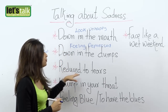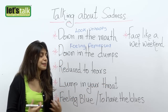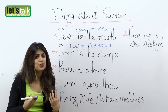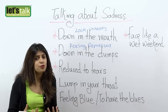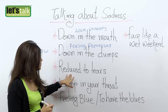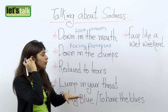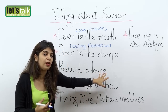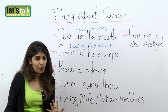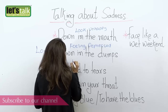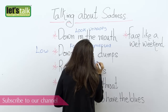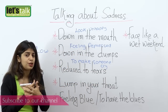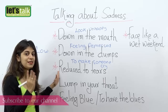Another expression is 'reduced to tears.' Reduced to tears means when someone or something makes you feel so unhappy or so miserable that you start crying. For example, you can say: 'My boss reduced me to tears with his constant criticism.' So here it means to make someone cry — you feel so bad, you are so depressed that you start crying. That's when you can use this expression.